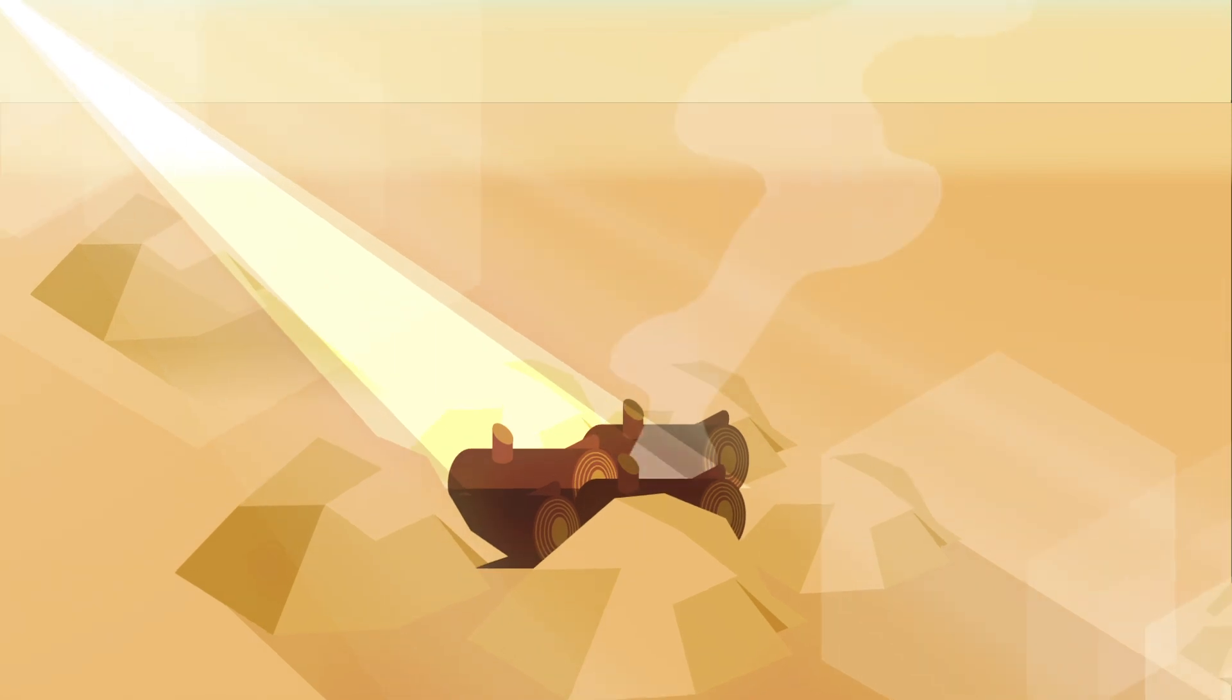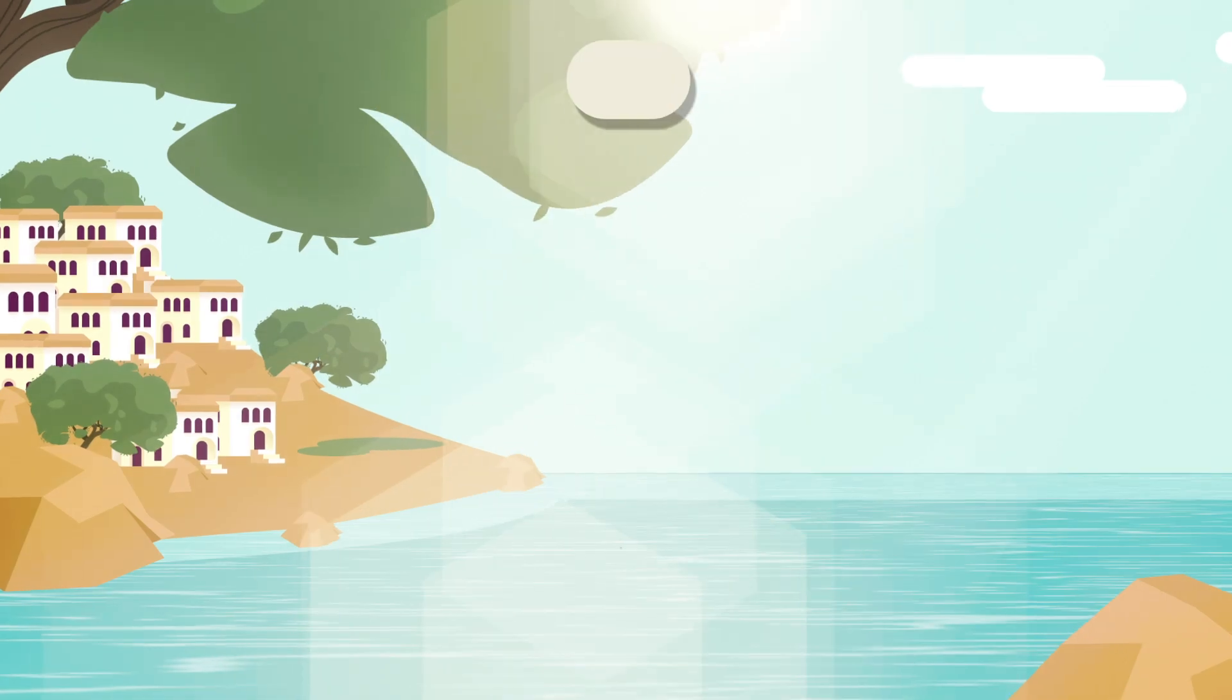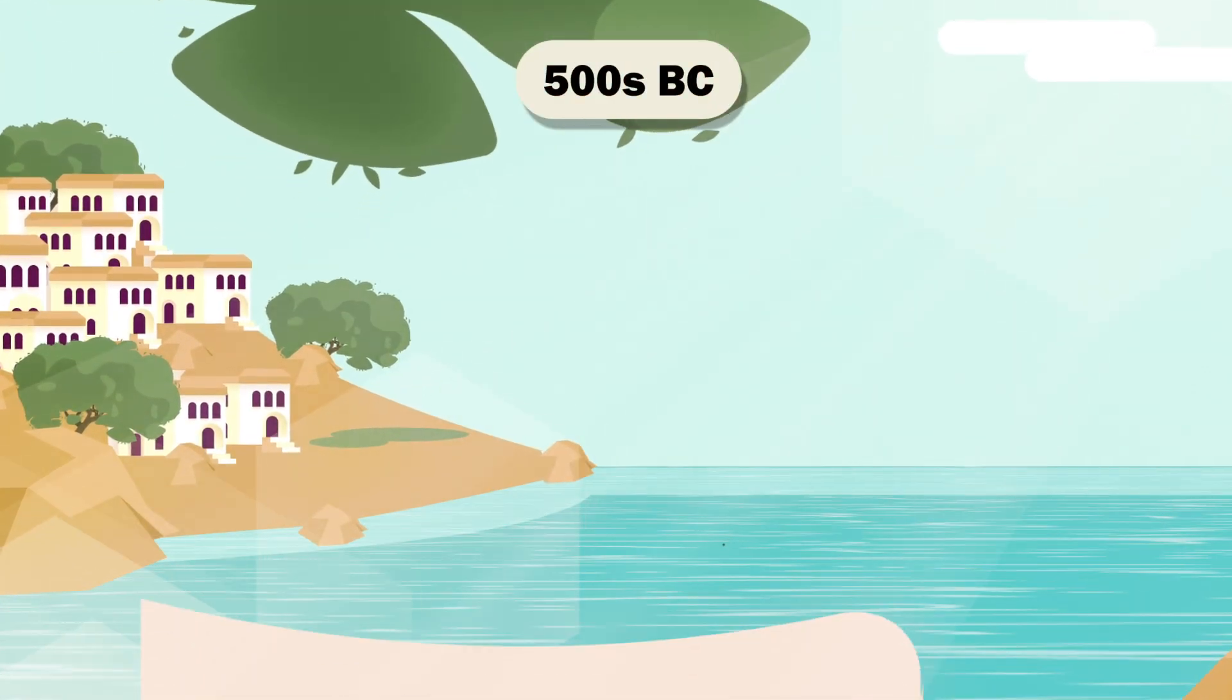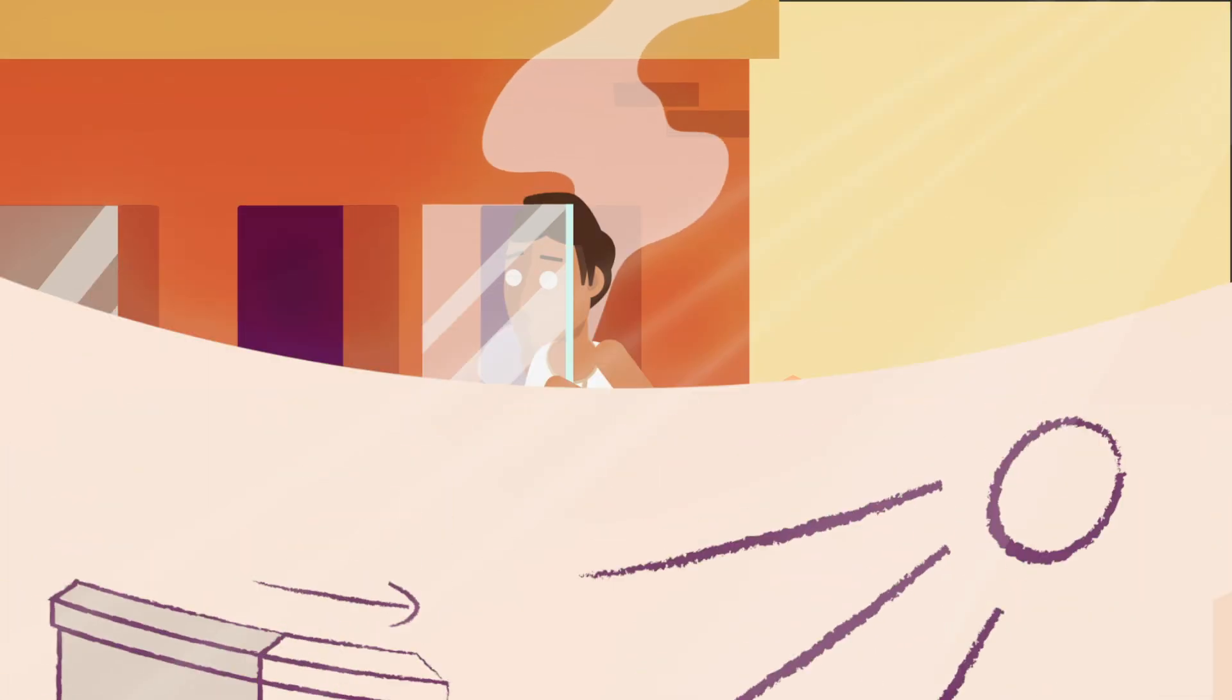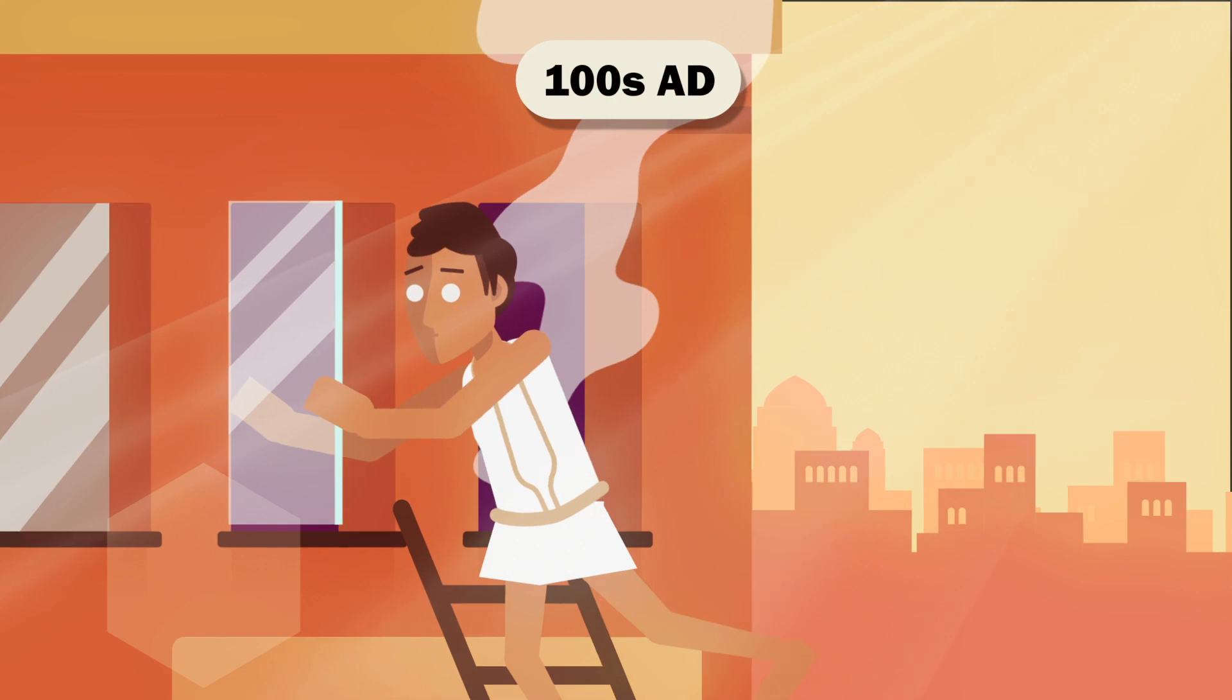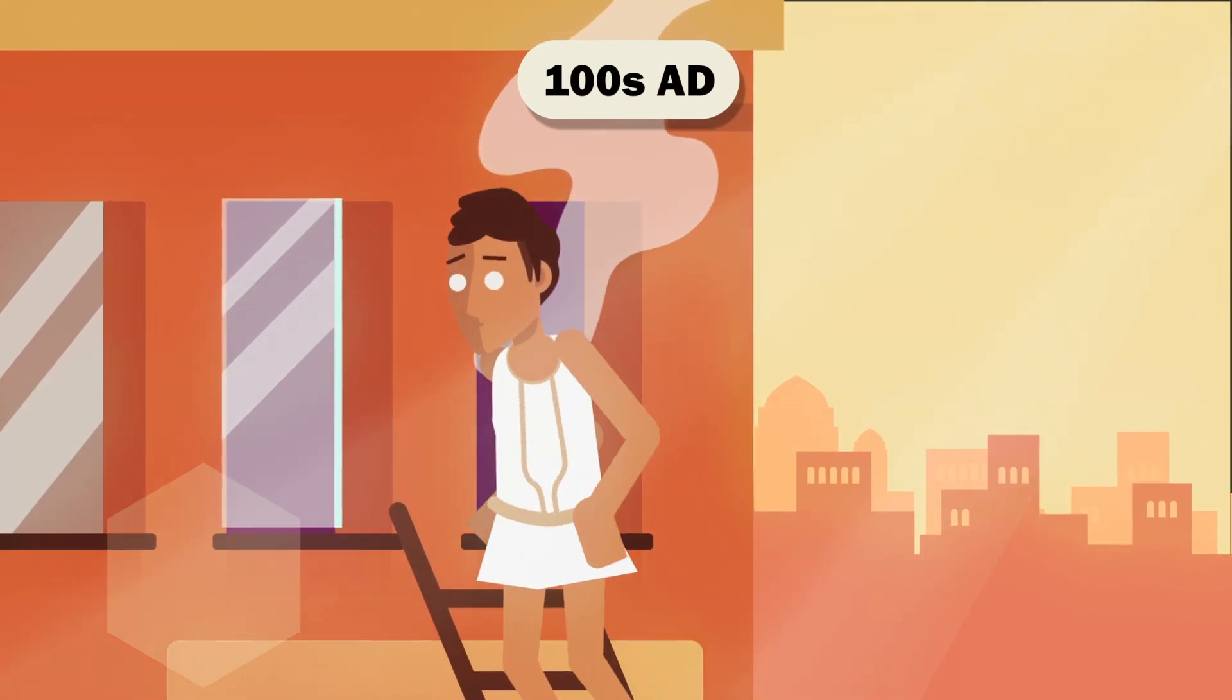Humans have been harnessing the sun's power since the beginning of time. In the 5th century BC, the Greeks were already designing their buildings to make the most of the sunlight, and the Romans incorporated glass into windows to keep heat inside their homes.